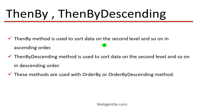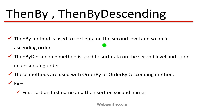You can use ThenBy or ThenByDescending with both OrderBy and OrderByDescending. For example, you could write OrderBy followed by ThenByDescending, or OrderByDescending followed by ThenBy. You can create combinations based on your requirements. A typical example: sort a contacts list first by first name, and if first names match, sort by last name.